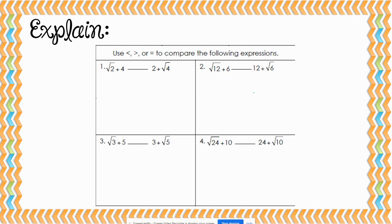Our first problem says the square root of 2 plus 4. If we take the square root of 2 and rewrite it as a decimal, we get approximately 1.41. So we would do 1.41 plus 4, which gives us 5.41. For 2 plus the square root of 4, the square root of 4 is 2, so we do 2 plus 2, which gives us 4. Comparing these, 5.41 is greater than 4, so we use our greater than symbol.